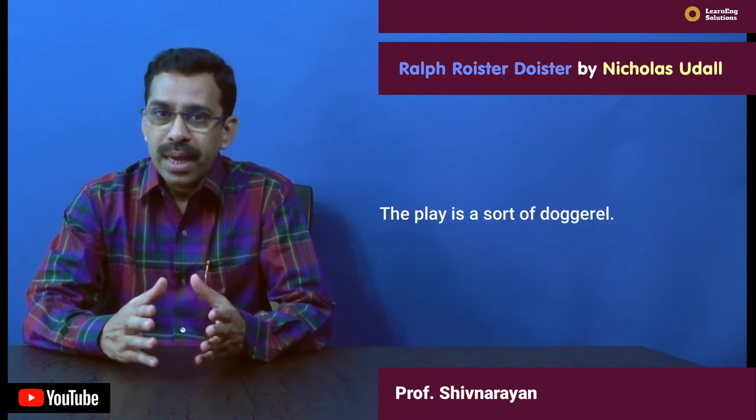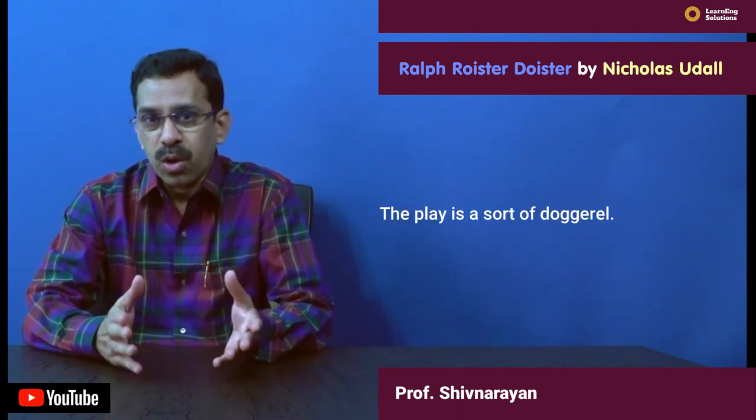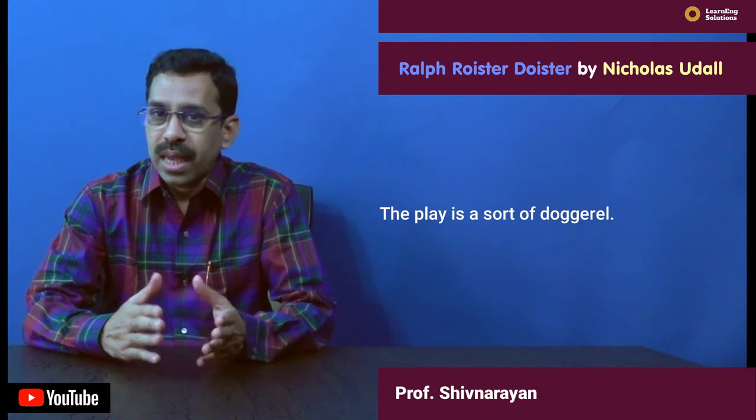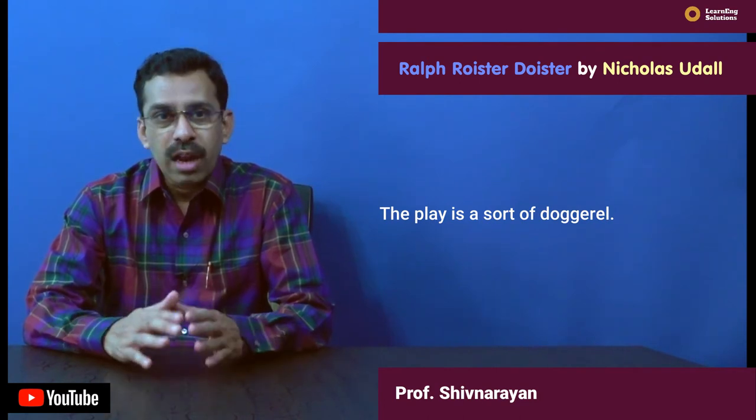It was probably written as a Christmas entertainment to be performed by Udall's students in London. The play is a sort of doggerel. The story of the play is as follows: Ralph Royster, the hero of the play, is a braggart and a coward. He is wealthy but foolish. The plot of the play centers on a rich widow. Her name is Christiane Custance.